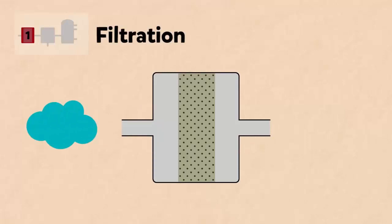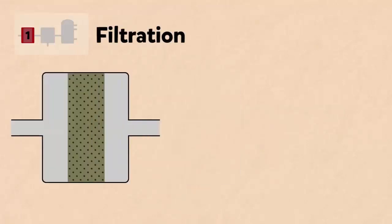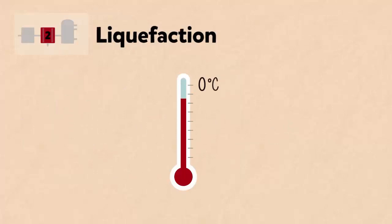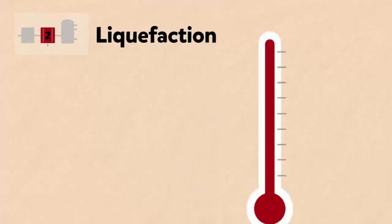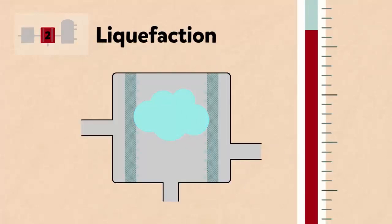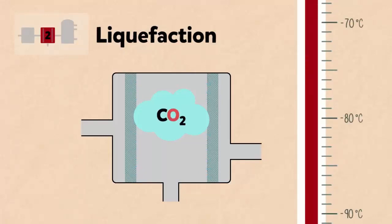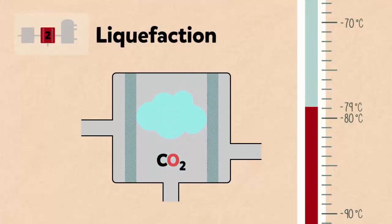Firstly, the air is filtered to remove dust. It is then cooled in stages to minus 200 degrees Celsius, at which temperature air is a liquid. As it is cooled, water vapour condenses and is removed by absorbent filters. Carbon dioxide is then removed at minus 79 degrees Celsius when it freezes.